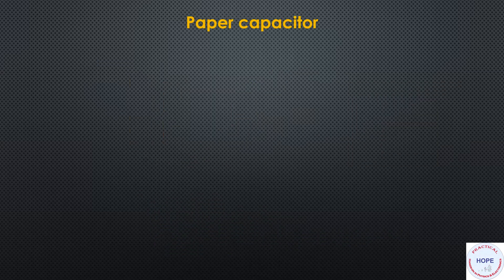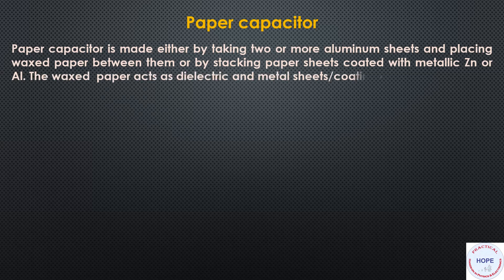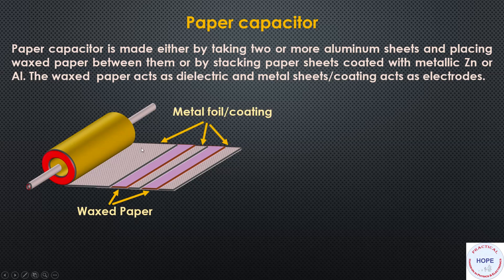Next is the paper capacitor. It is made either by taking two or more aluminum sheets and placing wax paper between them, or by stacking paper sheets coated with metallic zinc or aluminum. The waxed paper acts as the dielectric and the metal sheets or coating acts as the electrodes.